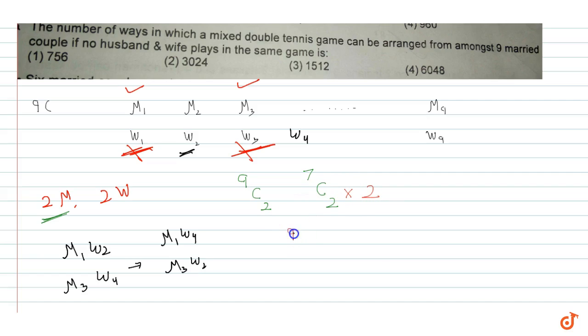So 9C2 equals nine times eight divided by two, times 7C2 which is seven times six divided by two, times two.